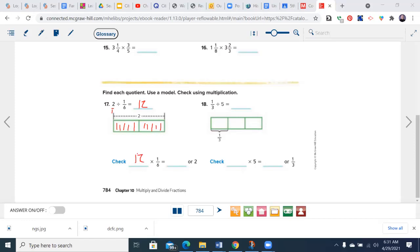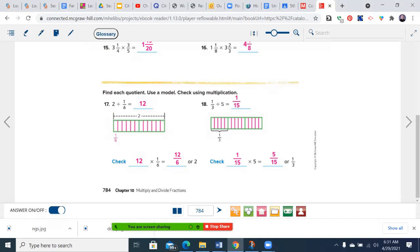So I check my work. 12 times 1 is 12, 1 times 6 is 6, 12 divided by 6 is 2. Go ahead and do number 18. You may pause the video now. Welcome back, let's see how you did. You divided each of these three sections into 5, so that's what we had to do there. Then you count them up, you have 15. And from there, you check your work. 1 fifth times 5 over 1 is 5 fifteenths.